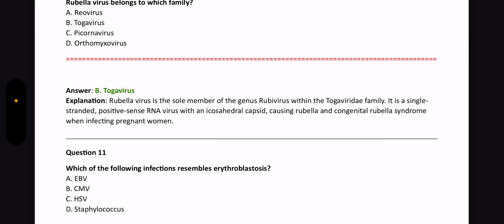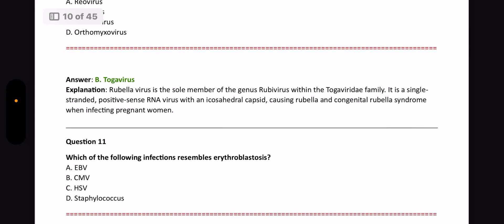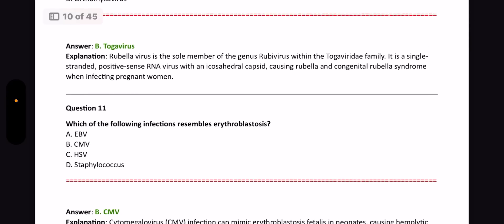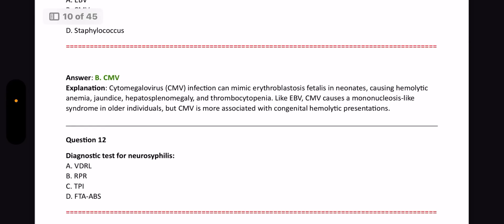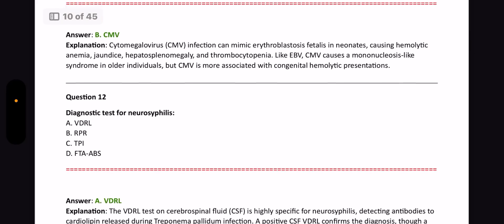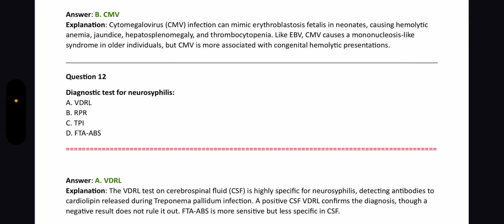The genus of certain viruses is important — rubella and others are very important, please check them. Next question: Which of the following infections resembles erythroblastosis? The answer is CMV. Next question: Diagnostic test for neurosyphilis? Neurosyphilis diagnostic test is VDRL.